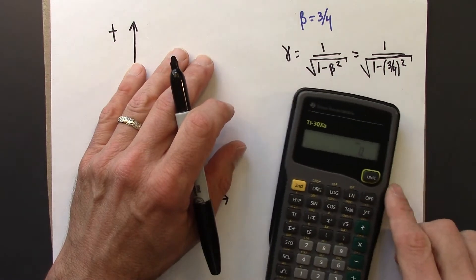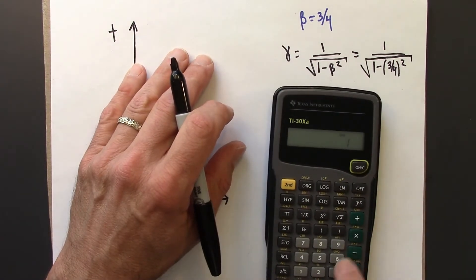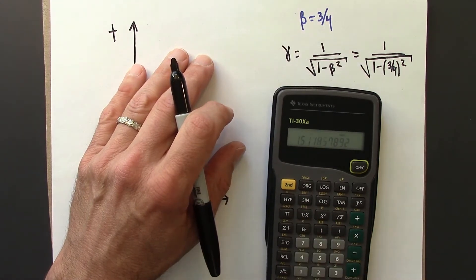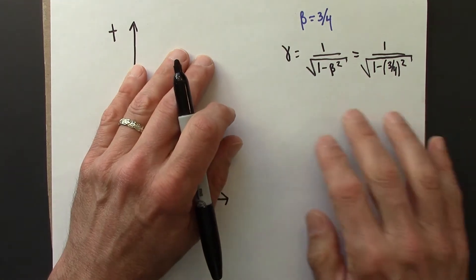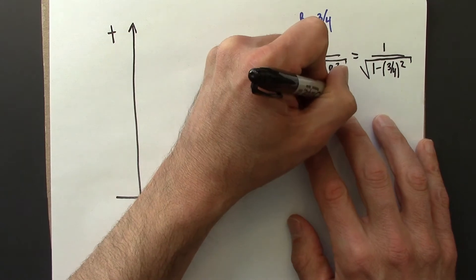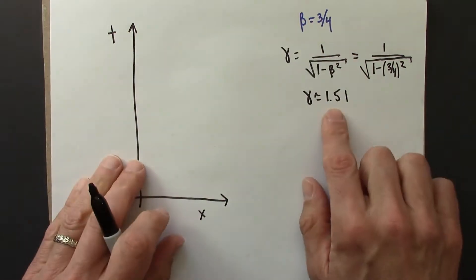So let's see, 3 quarters is 0.75, 1 minus 0.75 squared. Take the square root, turn upside down, and I get gamma is roughly 1.51.